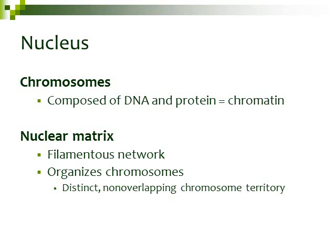The nucleus contains the chromosomes, which are composed of DNA and associated proteins that help to wrap up that DNA into their chromosome structures. The DNA and protein together, when it's a diffuse, string-like substance, is called chromatin. Also inside of the nucleus, you have the nuclear matrix, which is a protein-filament network that helps organize these chromosomes.